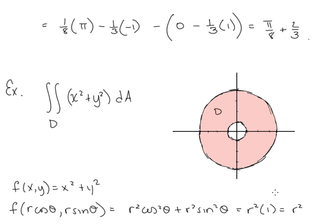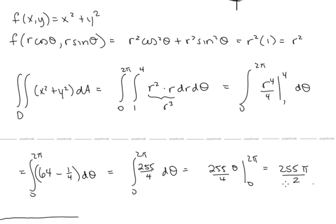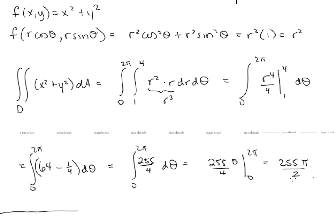Now let's look at another example: integrate x squared plus y squared over the domain D, which is the region between the circle of radius 1 and the circle of radius 4. In Cartesian coordinates, we'd have to split this domain into type 1 and type 2 regions. It's much easier to describe in polar coordinates, and because x squared plus y squared equals r squared is so simple in polar, the whole problem simplifies. The integral becomes the integral of r squared times r dr dtheta, with r from 1 to 4 and theta from 0 to 2 pi, giving 255 pi over 2.